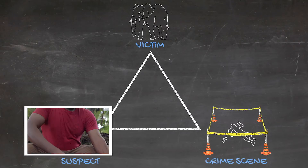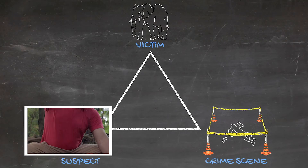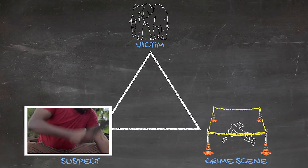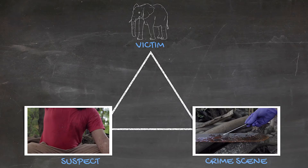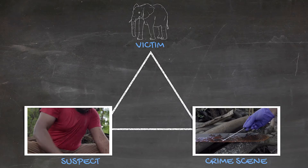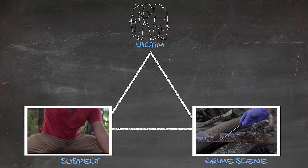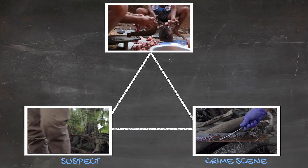For example, blood may be found on the suspect that can be linked to a knife found at a crime scene, which in turn is linked to some seized bushmeat.